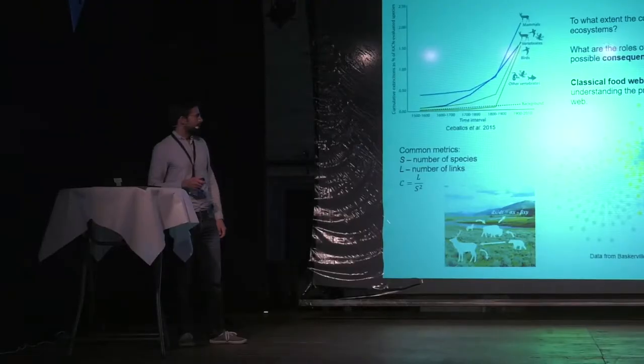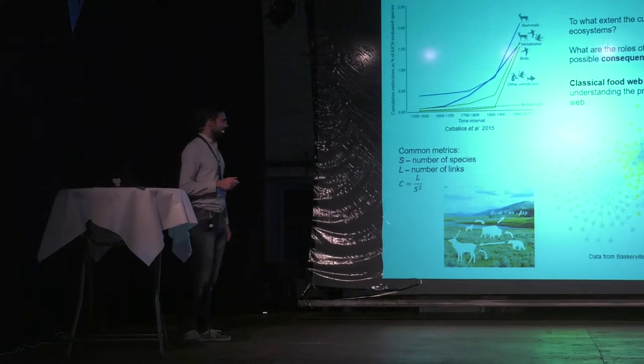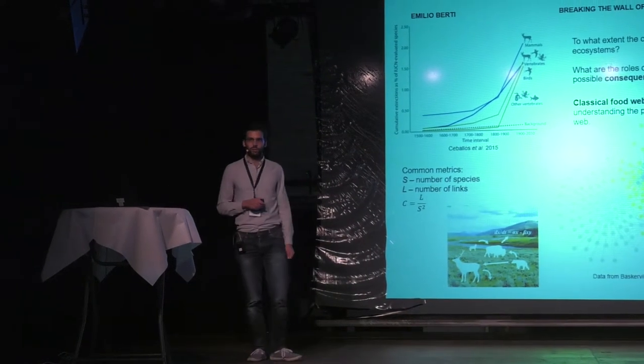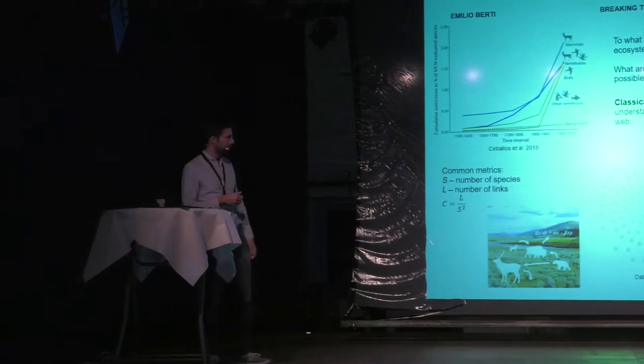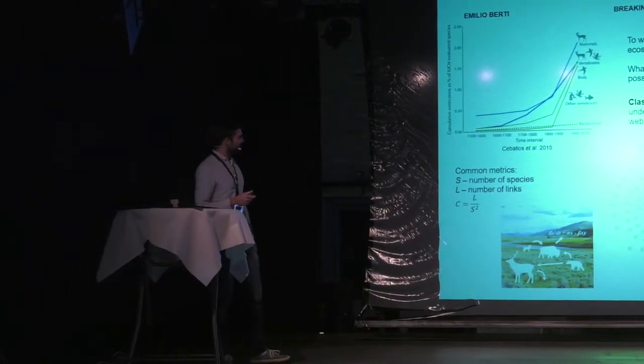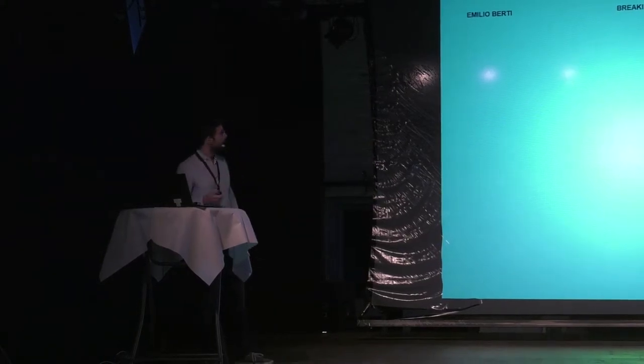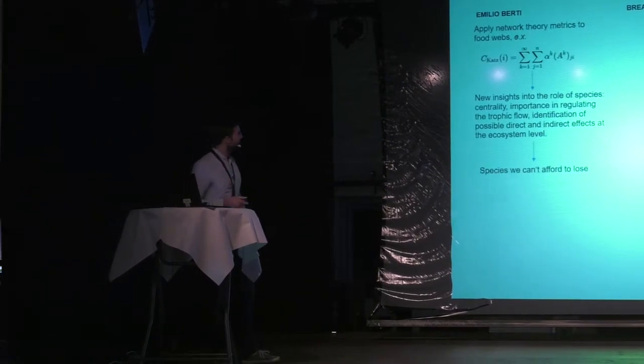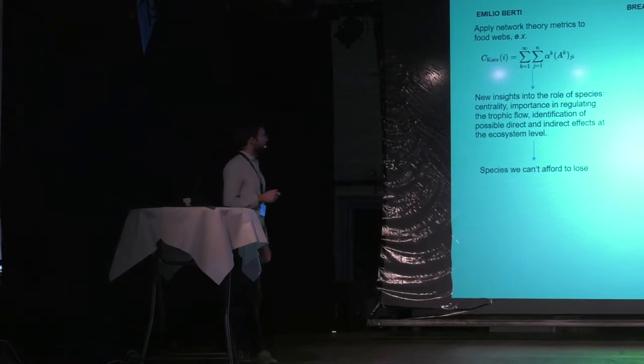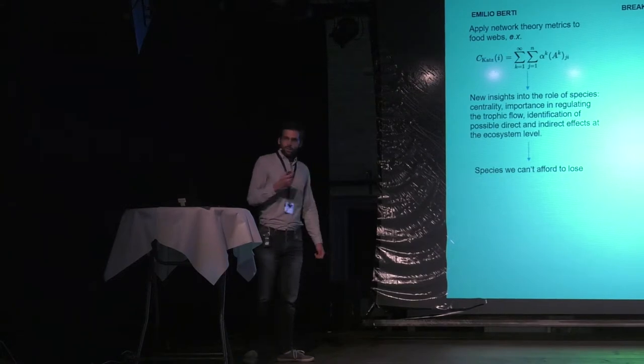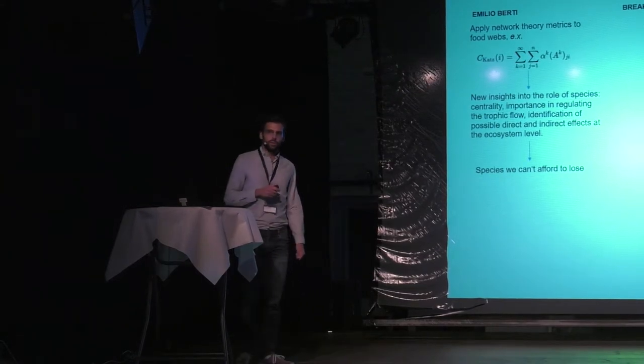But the problem with these metrics is that they don't give us a lot of information about a single node, but just the general structure of the network. So this is my wall, and my suggestion to break it is to use what is called network theory, which developed its own metrics like this one that can give us information about a specific node in the network.